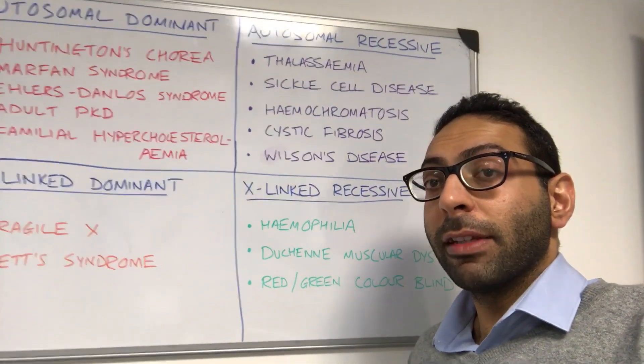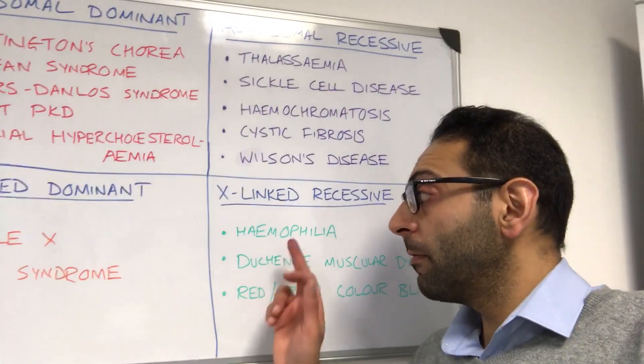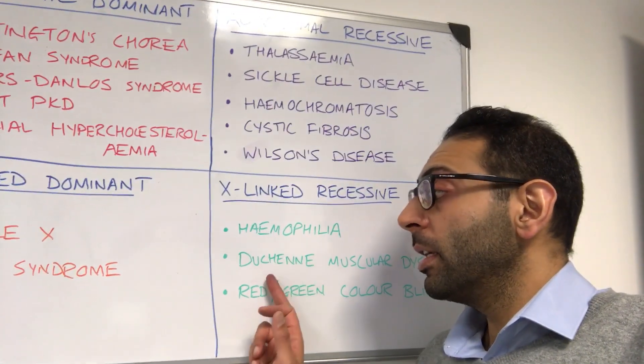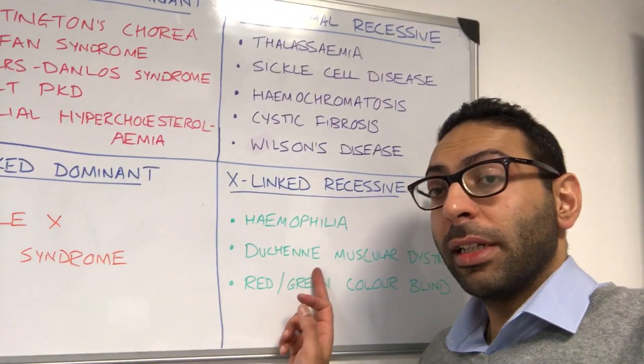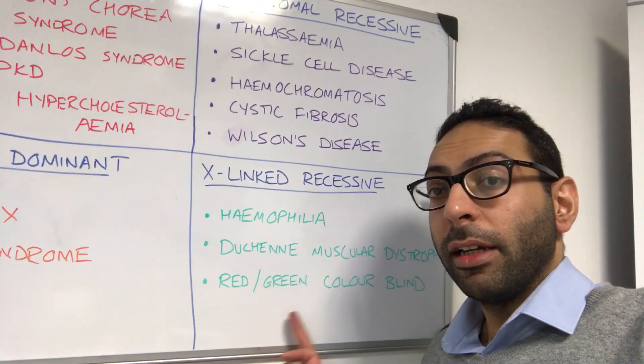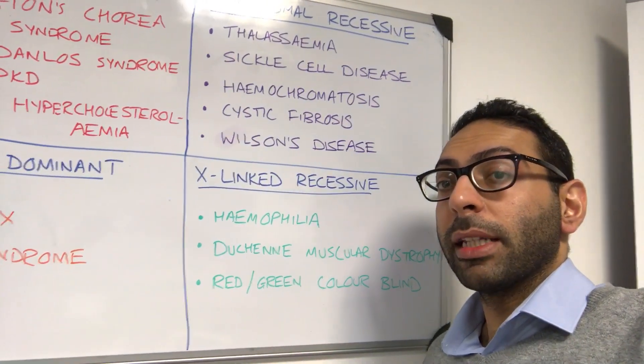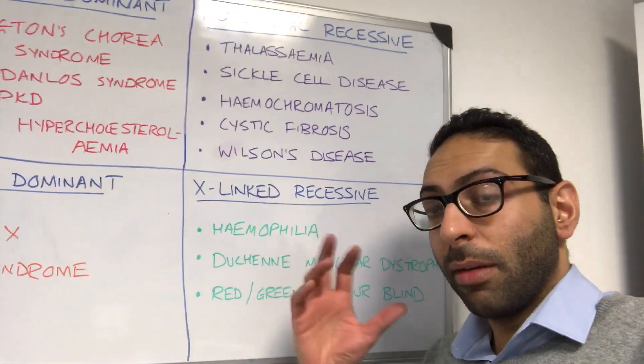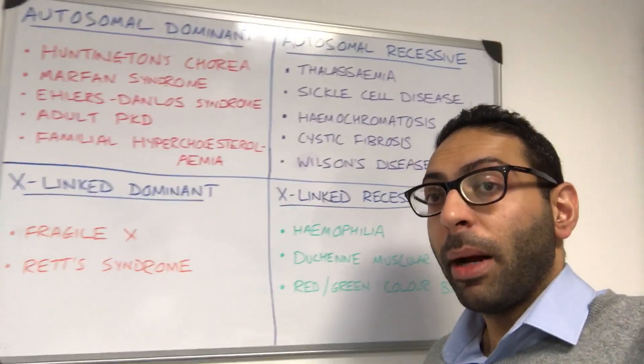And then you have X-linked recessive — things like hemophilia A and B, Duchenne muscular dystrophy, and red-green color blindness. Of course there are lots of examples to think about, but if you get some key ones in your mind, it makes things simpler.